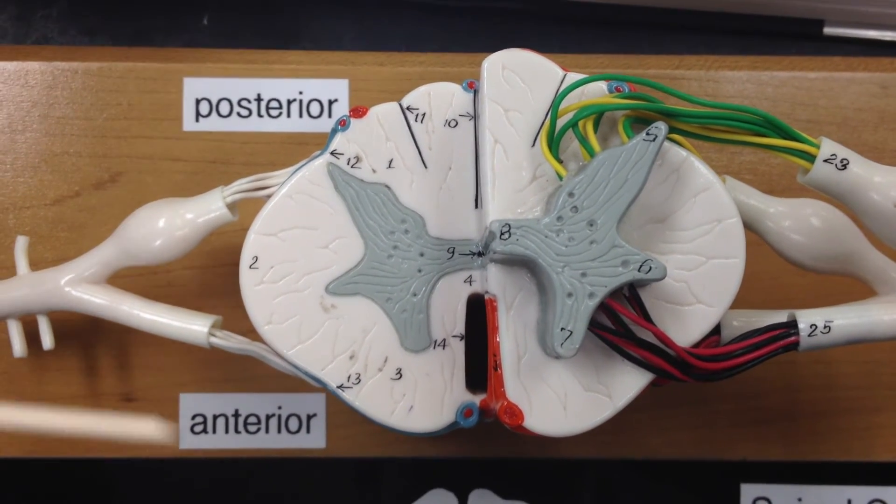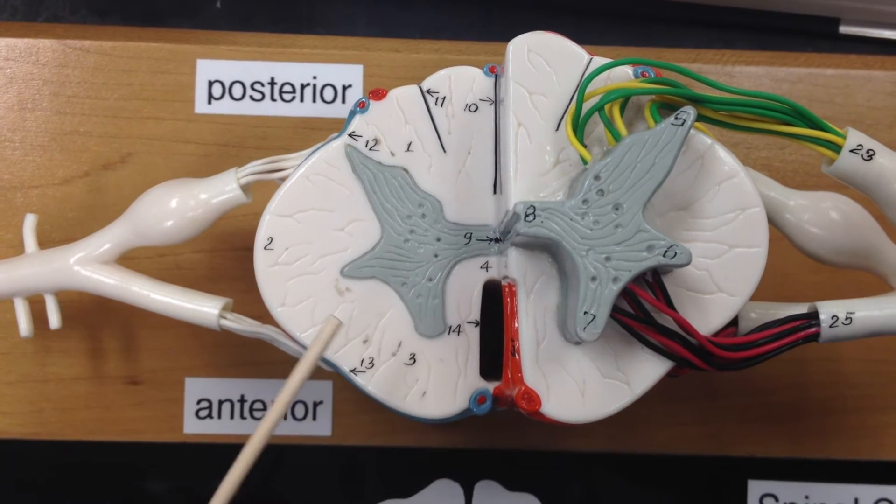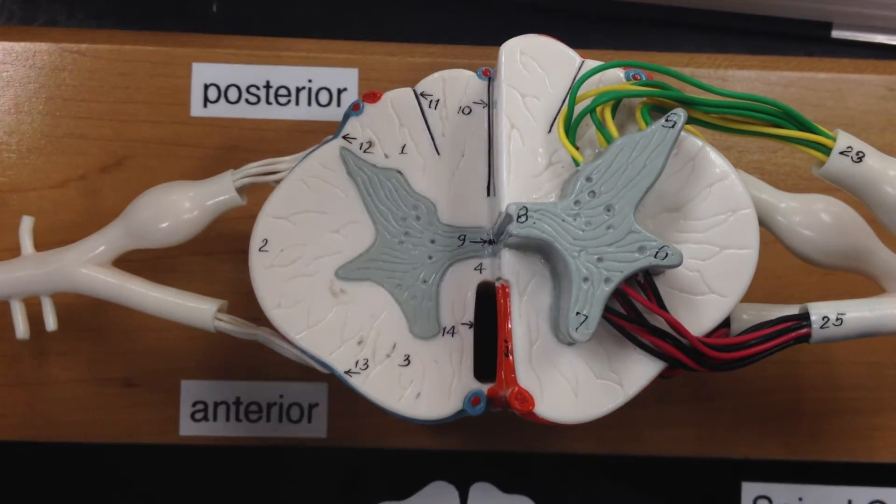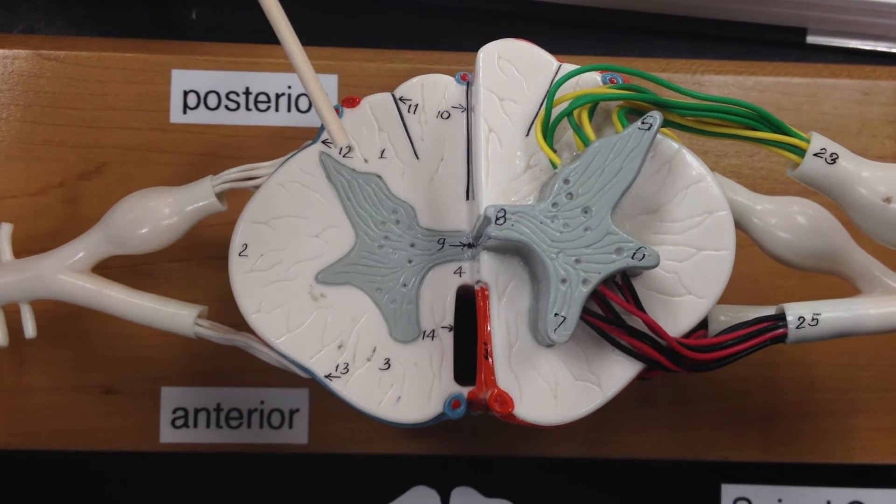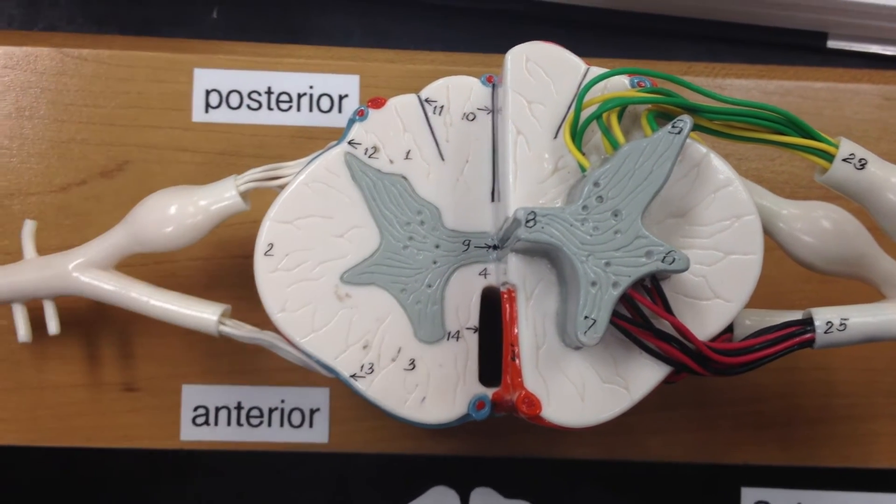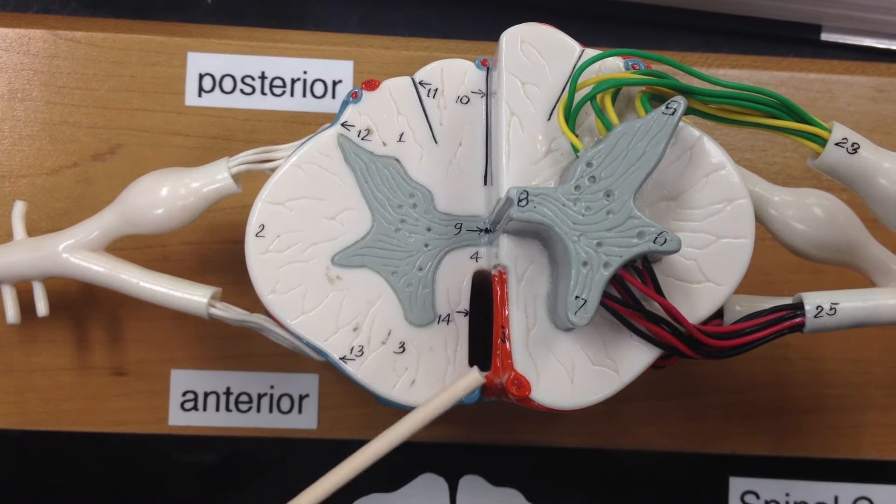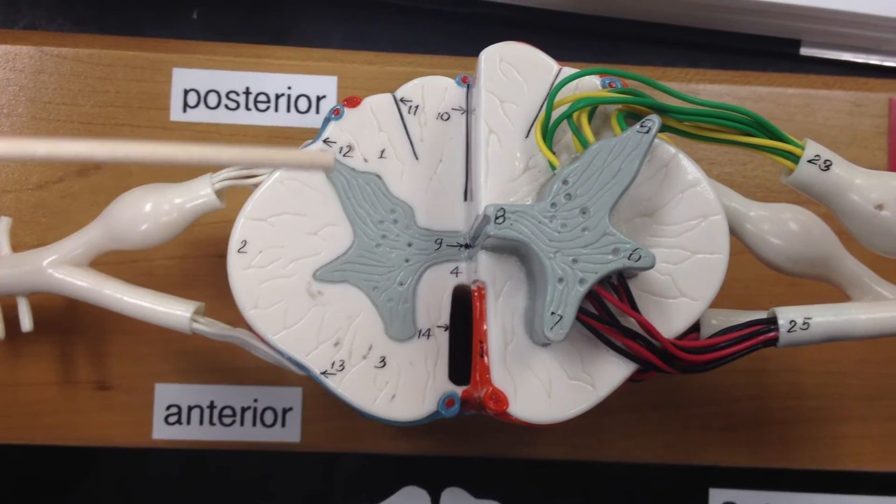Moving on to the white matter. There's the posterior white column, the anterior white column, and the lateral white column.